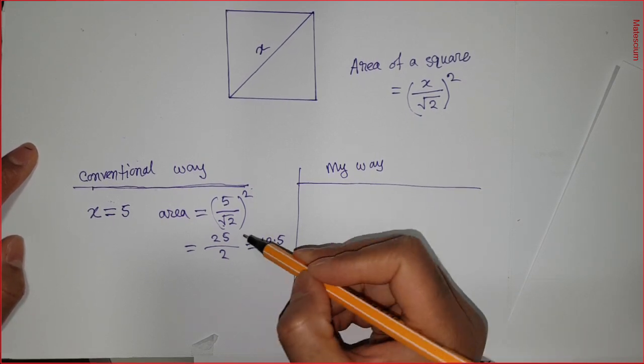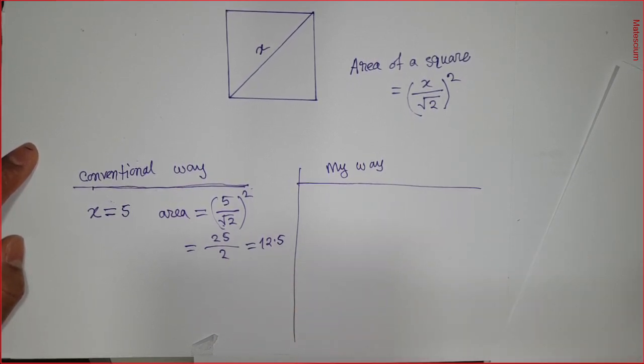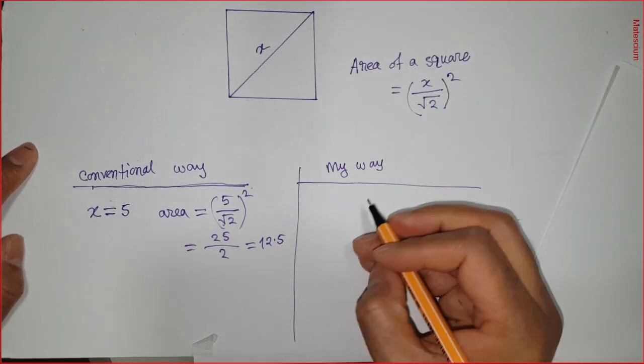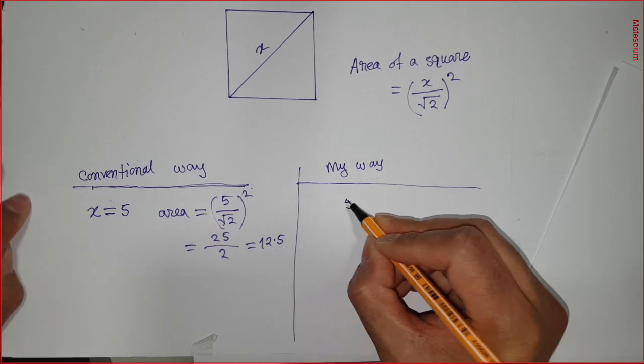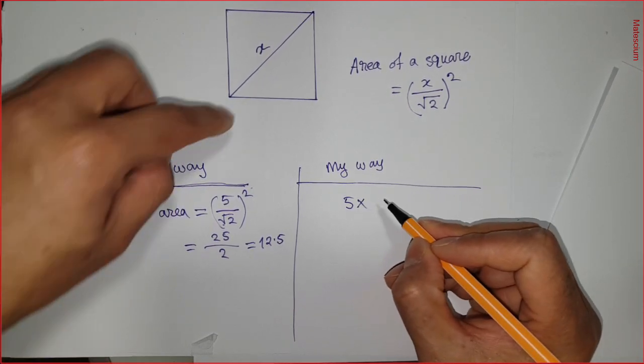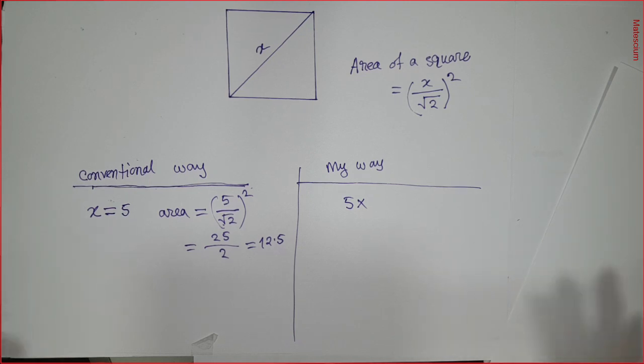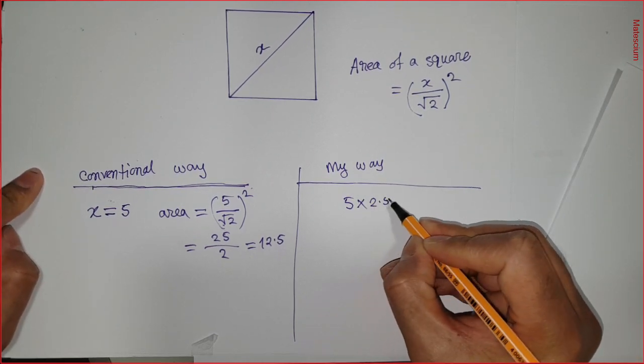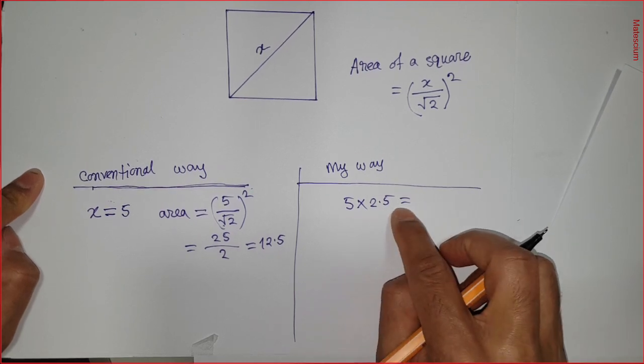Let me show you my way, which is more simplified than this typical or conventional way. My way is to directly write this diagonal length, which is 5 here.